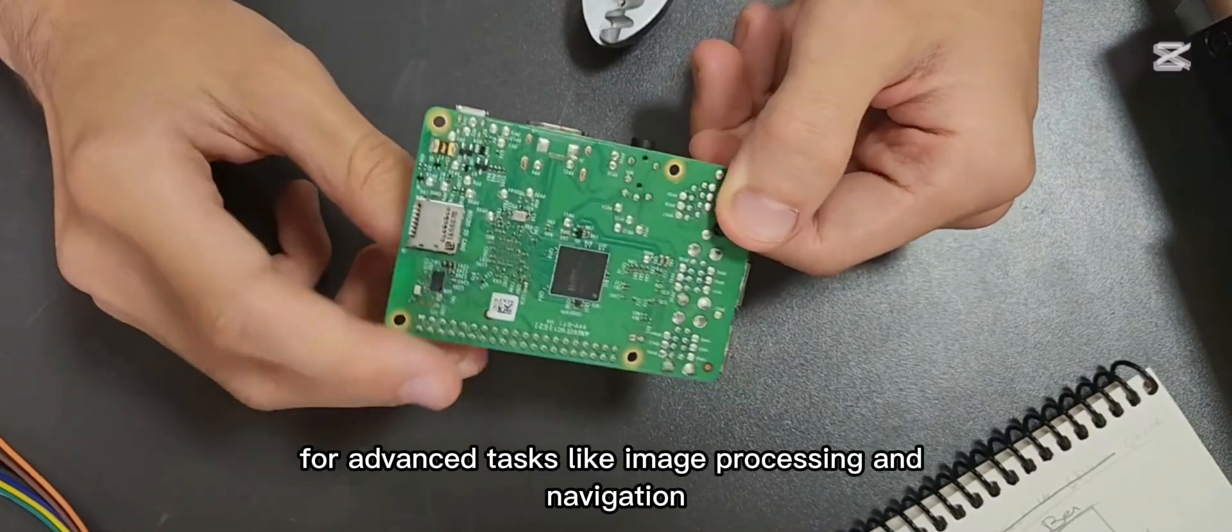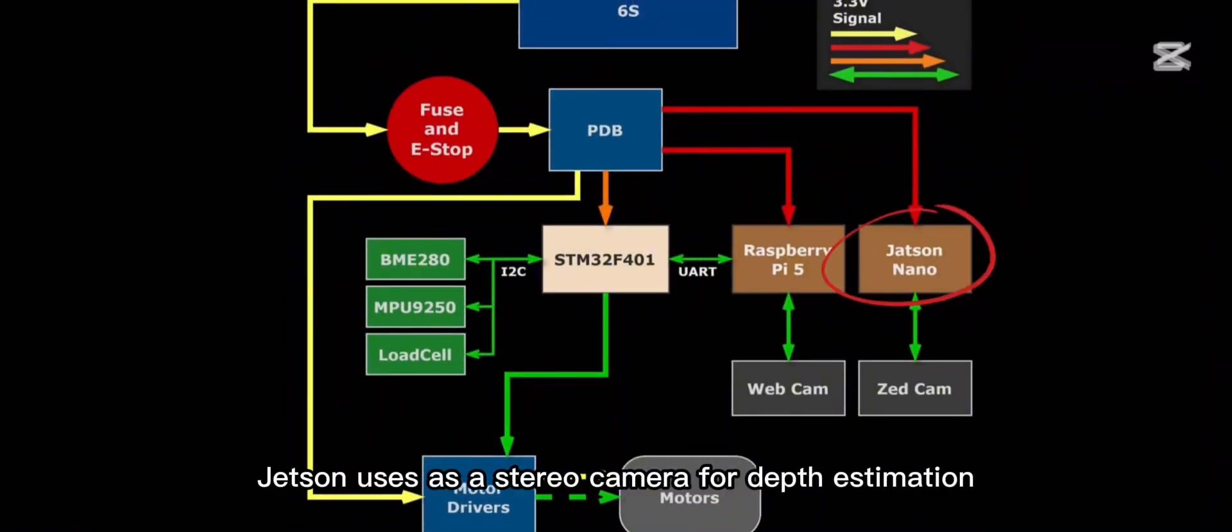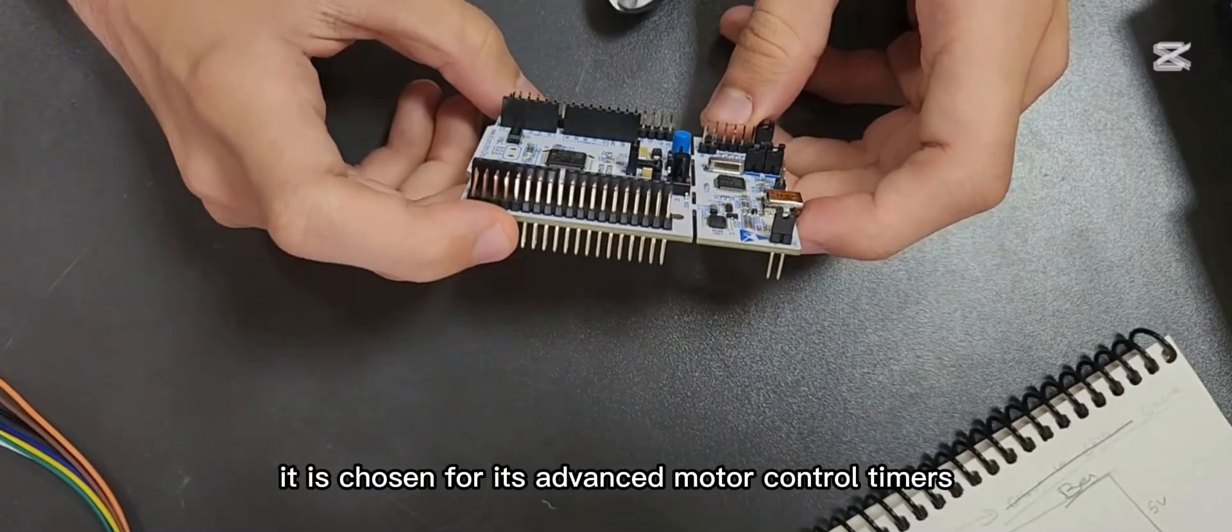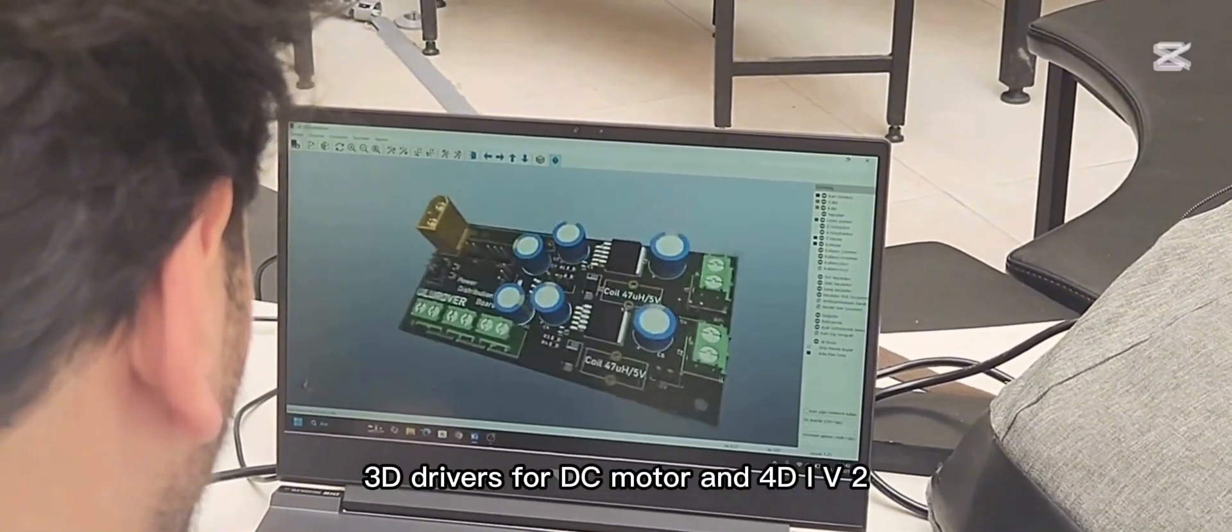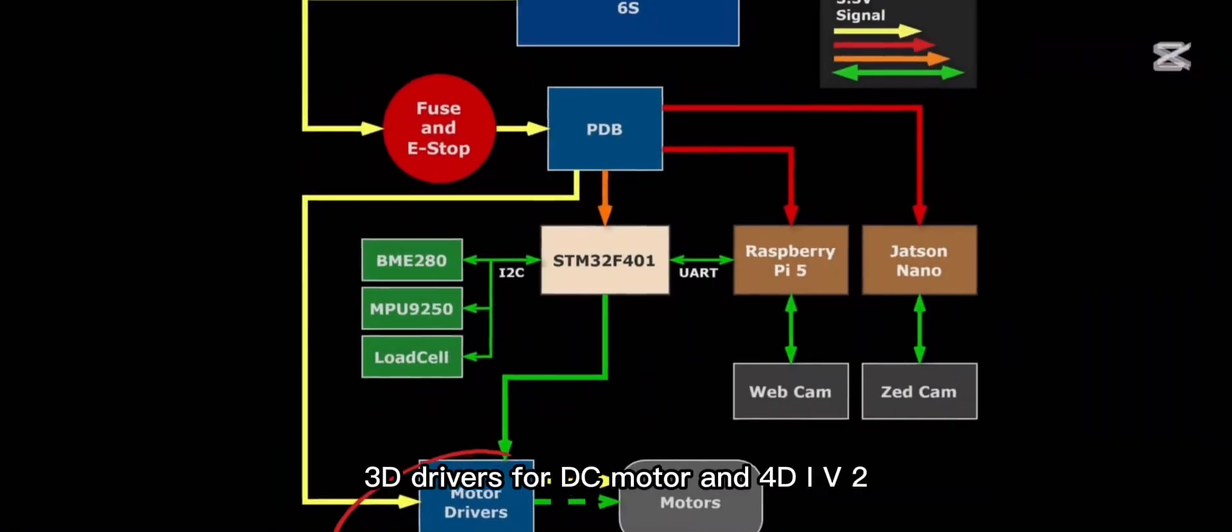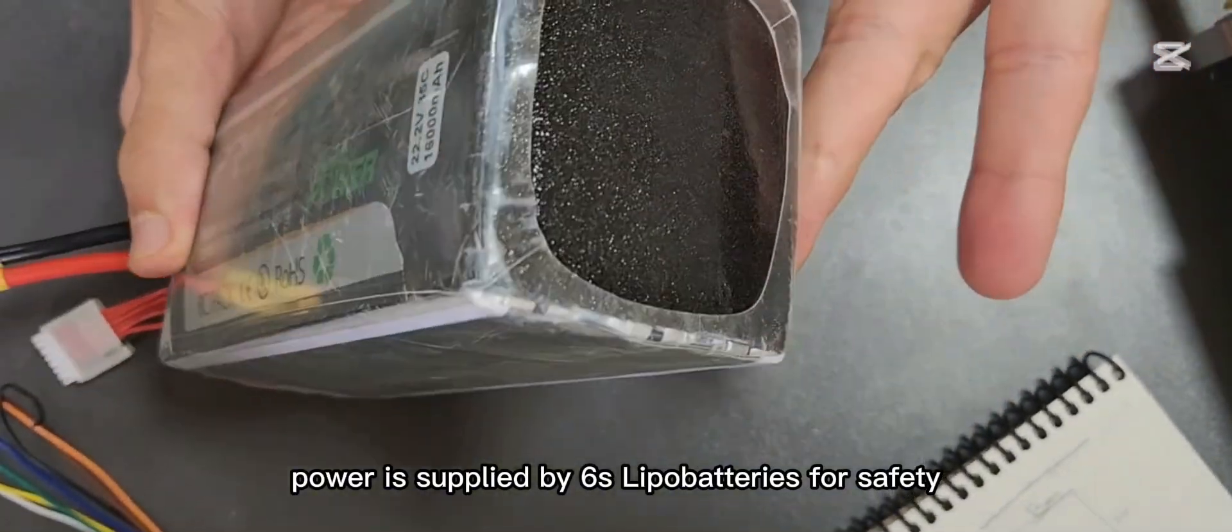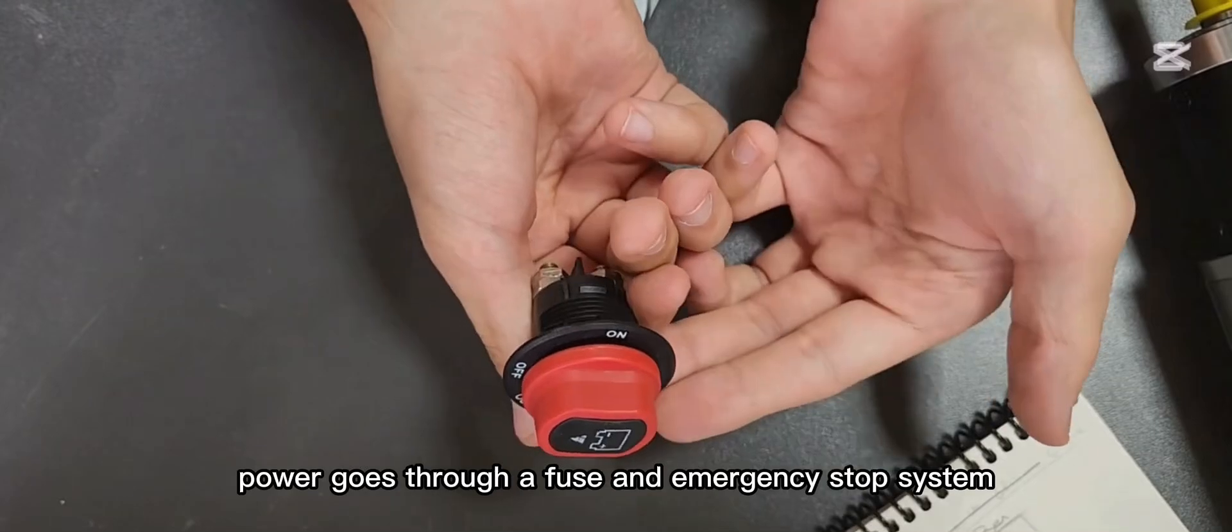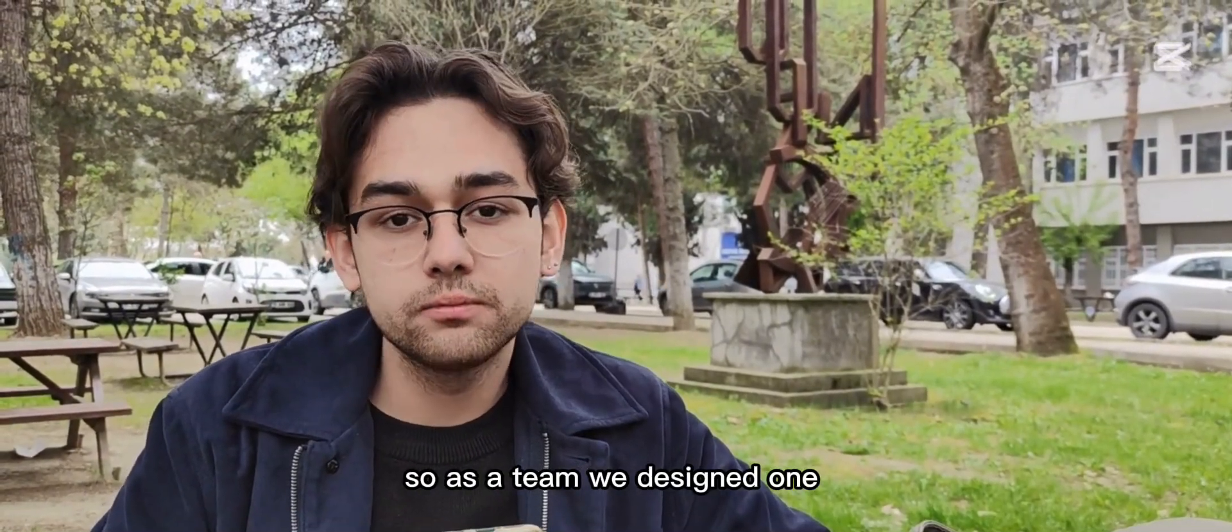For advanced tasks like image processing and navigation, we use both a Raspberry Pi 5 and Jetson Nano. Jetson uses a ZED stereo camera for depth perception. Motor control is handled by STM. It is chosen for its advanced motor control timers. We use custom designed PCBs with L293D drivers for DC motors and four DRV8825 drivers for stepper motors. Power is supplied by 6S LiPo batteries. For safety, power goes through a fuse and emergency stop system before reaching the power distribution board. We couldn't find any power distribution board that meets our requirements. So as a team, we designed one.